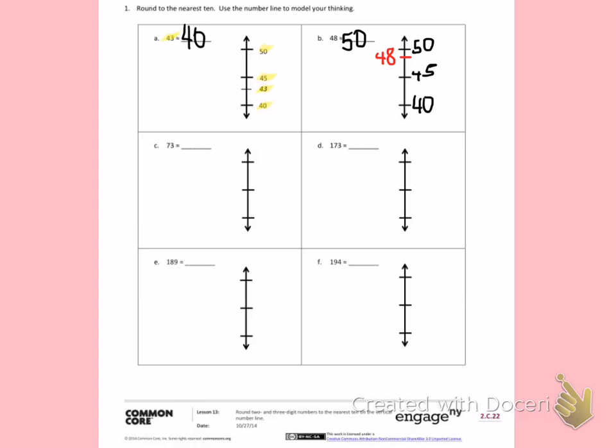Letter C. I see I have 73. 73 fits between two 10s. Those two 10s are 70 and 80. The halfway number is 75. 73 fits about here on the number line. If I look at where I modeled 73, it has not made it to the halfway number, so I am going to round down. 73 is about 70.